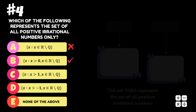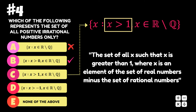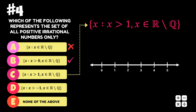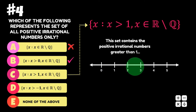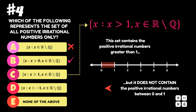Looking at Option C, we can describe this set as the set of all x such that x is greater than 1, where x is an element of the set of real numbers minus the set of rational numbers. This set contains positive irrational numbers greater than 1, but it does not contain the positive irrational numbers between 0 and 1. Hence, this set does not represent the set of all positive irrational numbers, so Option C is incorrect.